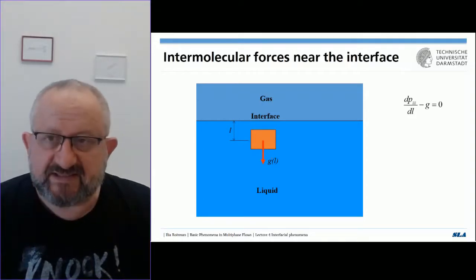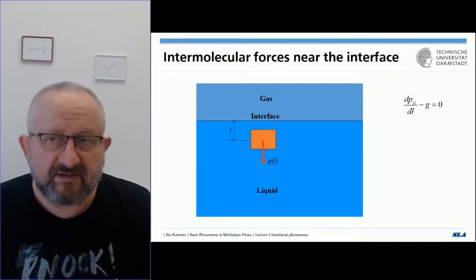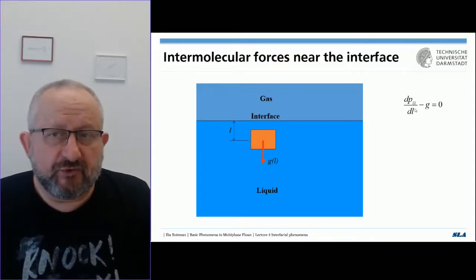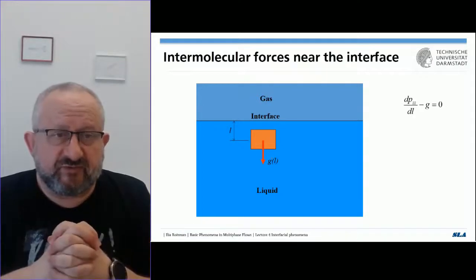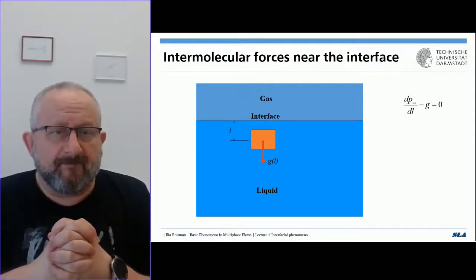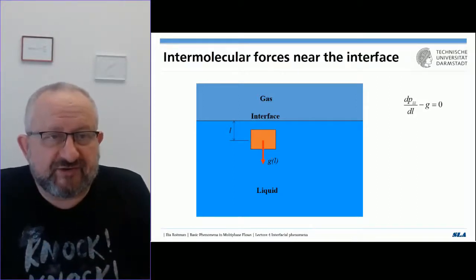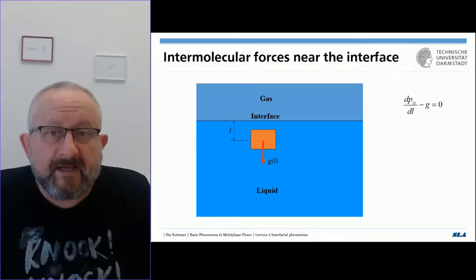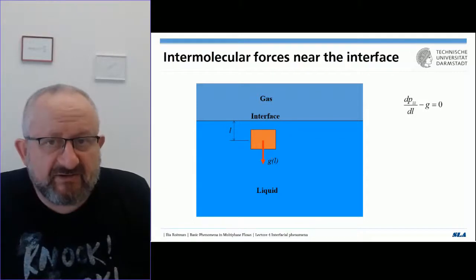In hydrostatics, we have the same situation: a control volume with a body force acting on it — the weight resulting from gravity. But in hydrostatics, the liquid volume also doesn't accelerate. Why? Because as a result of the weight of our control volume, we have a pressure difference — different pressures at different sides of our control volume. We can write the balance equation: in the steady state, the pressure gradient dP/dL equals gravity. In hydrostatics, this leads to a linear growth of pressure. But in our case, because the intermolecular force is not constant but is a function of distance, it leads to the generation of a pressure gradient near the interface.